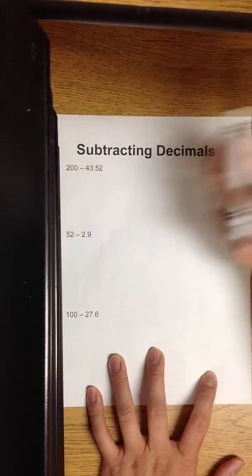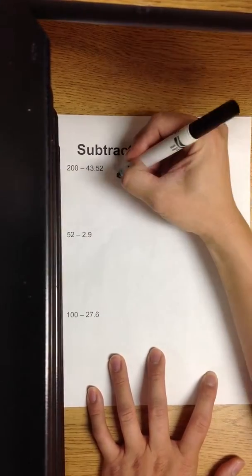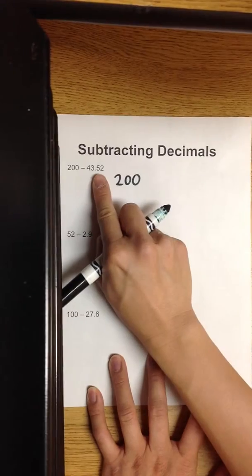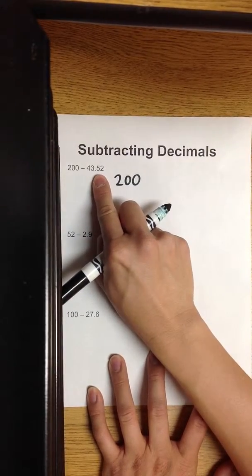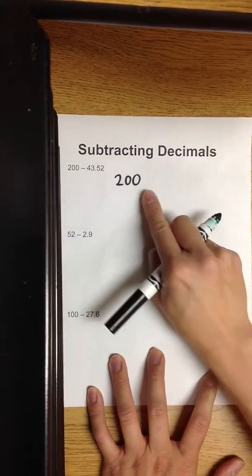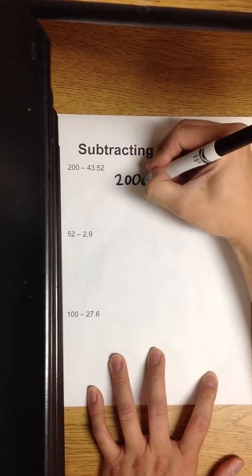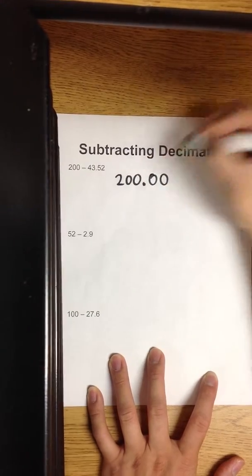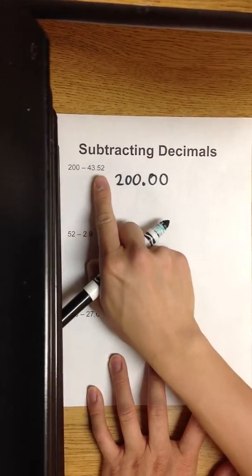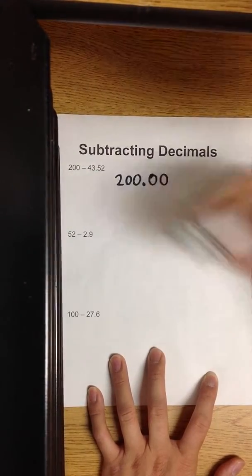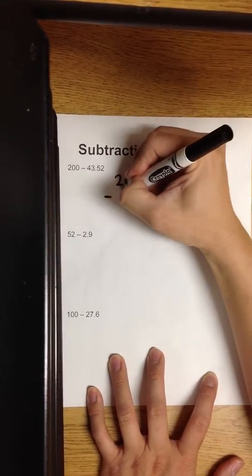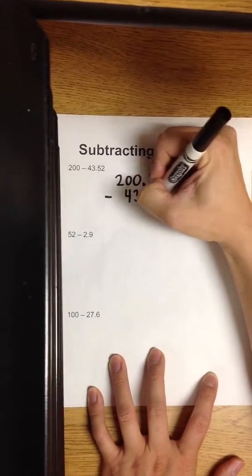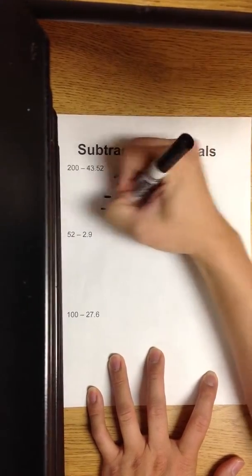So, 200 — this is going to the hundredths place, so that means I will need two placeholders here, since this is in the hundredths place. Minus 43 and 52 hundredths.